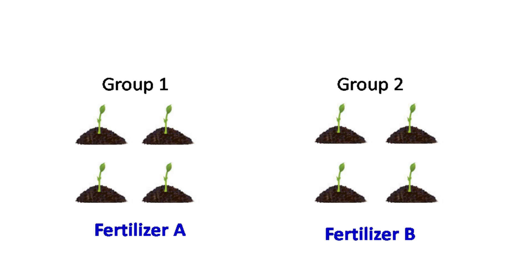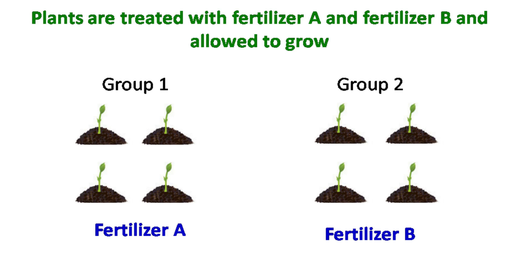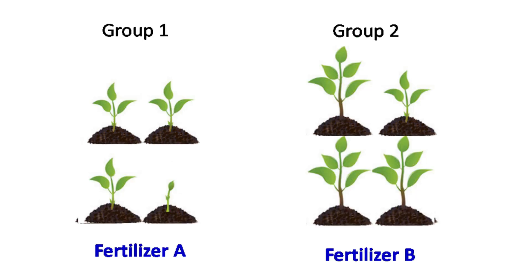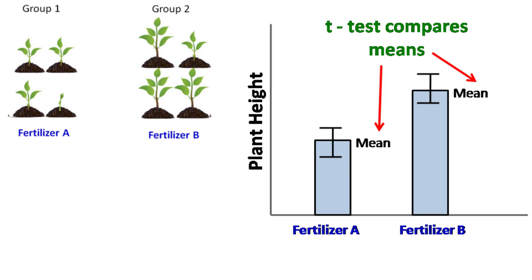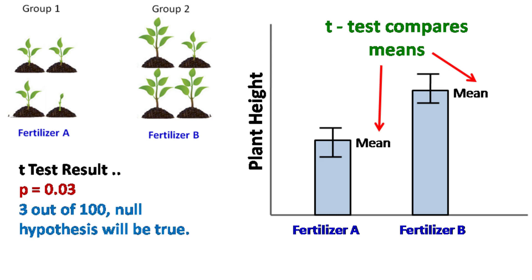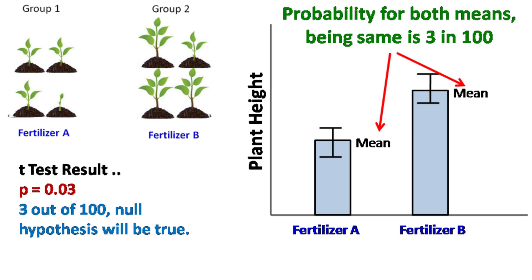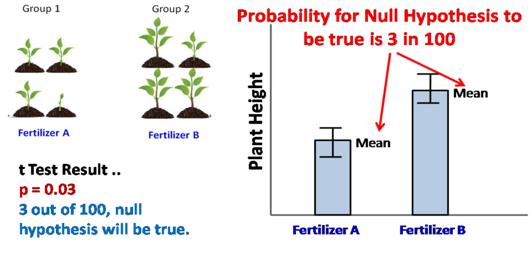Consider the previous experiment where the plants were given fertilizer A and fertilizer B. A graph represents the mean and the standard deviation in the height of the plant. The t-test is going to compare the two means. Let's say the p-value for this test is 0.03 — this means if I repeat this experiment 100 times, only 3 out of 100 times the null hypothesis is going to be true.